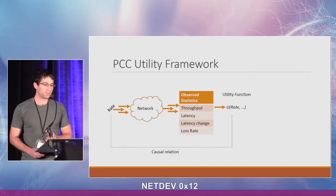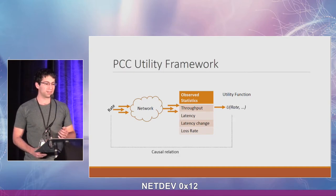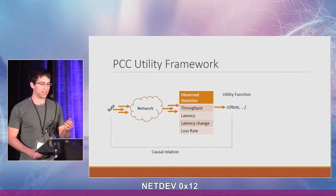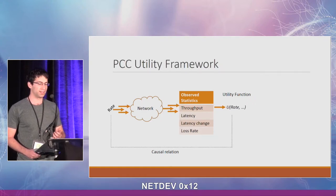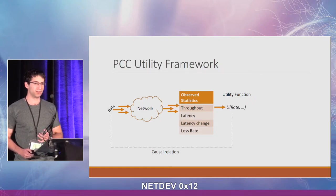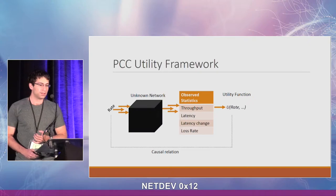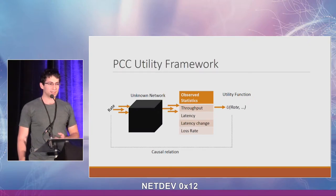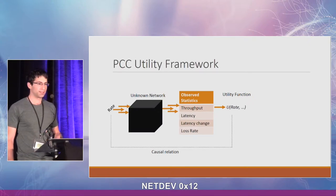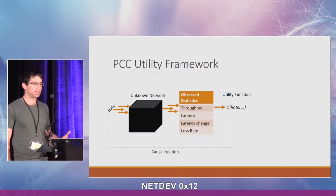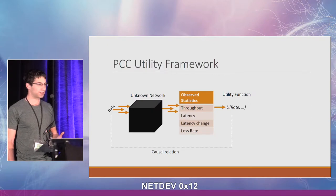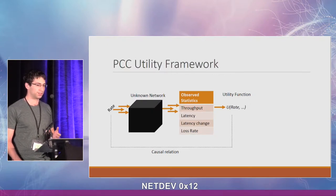This means PCC relies on a causal relation between the sending rate and the value of the utility. It allows PCC to treat the network as a black box and make as few assumptions as possible about the structure of the network.